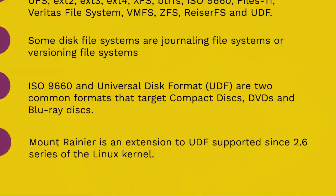Some disk file systems are journaling file systems or versioning file systems. Optical disk formats ISO9660 and Universal Disk Format (UDF) are two common formats that target compact disks, DVDs, and Blu-ray disks. Mount Rainier is an extension to UDF supported since the 2.6 series of the Linux kernel and since Windows Vista, that facilitates rewriting of DVDs.